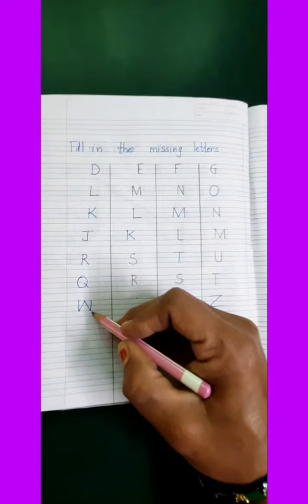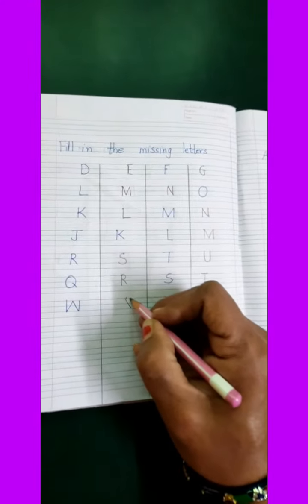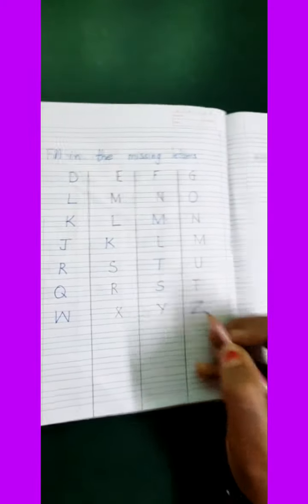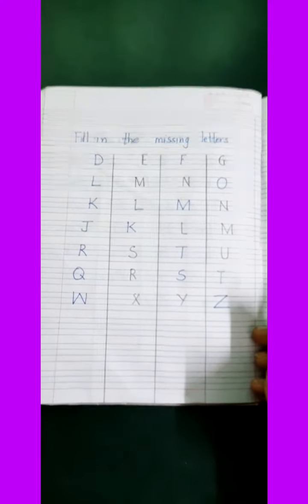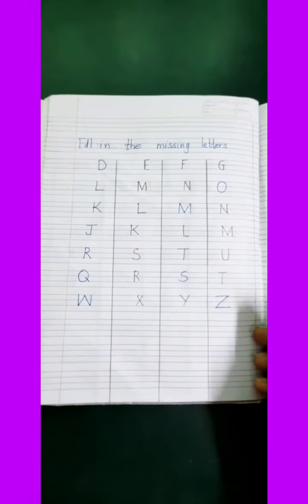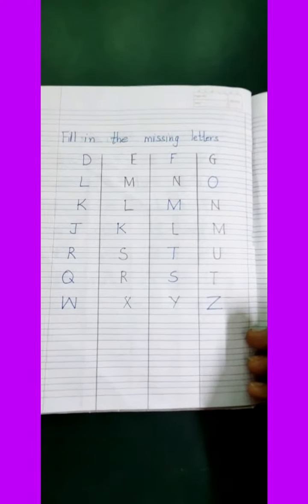Now what letter is this children? W. What comes after W? X. Y. Z. Now children, I have finished writing fill in the missing letters. Now you watch this video and learn to write fill in the missing letters in your rough copy. Thank you.